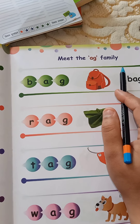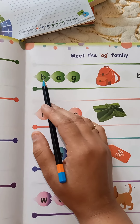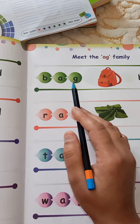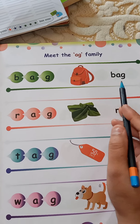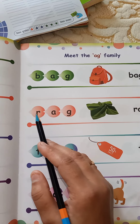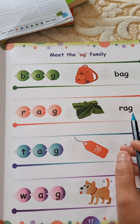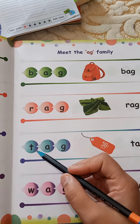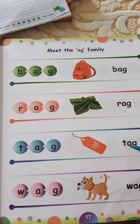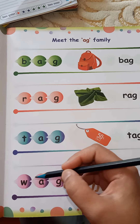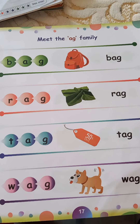Meet the A family. P, ab — bag. R, ab — rag. T, ab — tag. W, ab — wag.